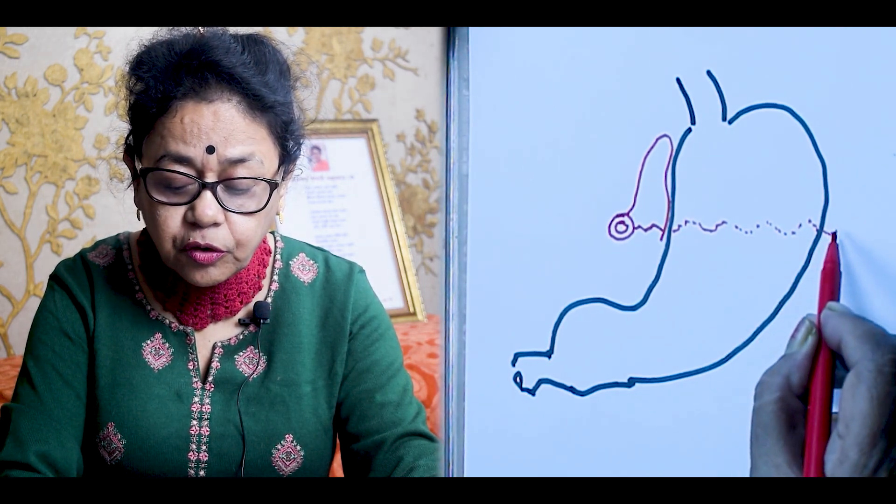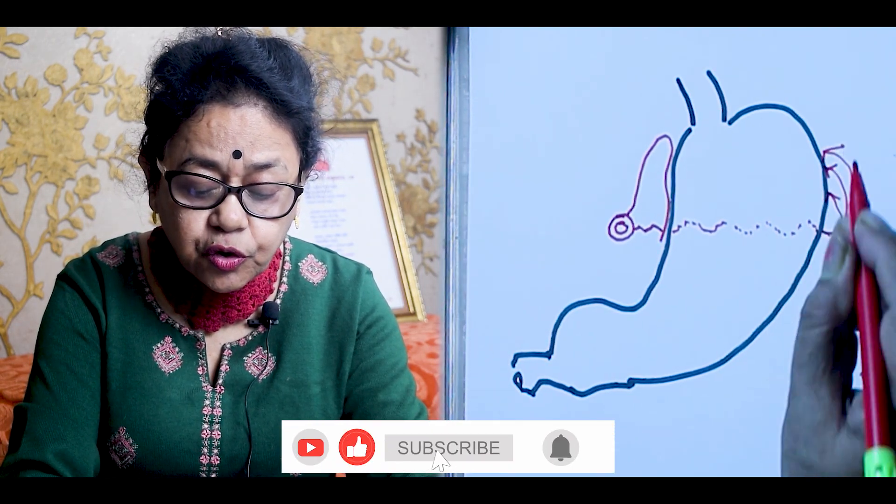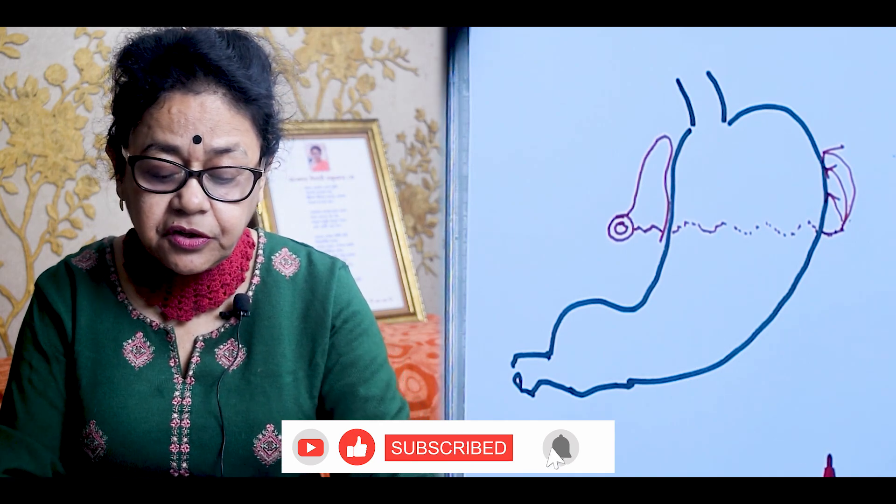The next artery is the tortuous splenic artery. It goes behind the stomach, which is why I draw it as a dotted line. From the splenic artery, small branches go and supply the fundus of the stomach — these are known as the short gastric arteries.